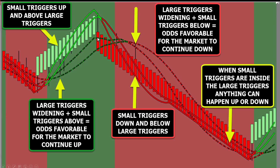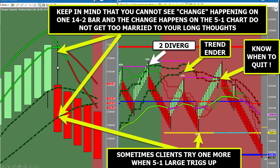There's one section on this chart I talk about every day in class. When the triggers are really wide on the larger chart, it doesn't always go up forever. It's very important that you're able to see on the smaller chart when we start to have termination conditions — pivot stopouts, divergence with a red background, pivot stopout with a red background. You have to know when to quit trading with the trend on the 5-1 chart.